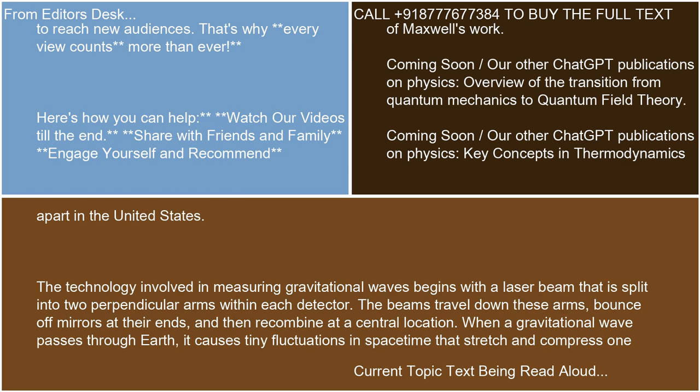The technology involved in measuring gravitational waves begins with a laser beam that is split into two perpendicular arms within each detector. The beams travel down these arms, bounce off mirrors at their ends, and then recombine at a central location.